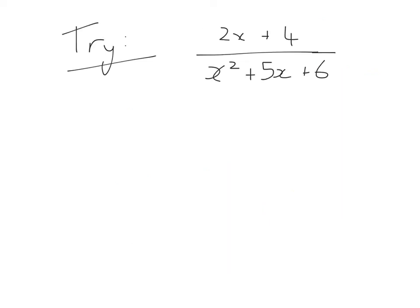Okay guys, please have a go with this question now. So we've got 2x plus 4 all over x squared plus 5x plus 6. And what I'd like you to do is to use factorization to simplify.